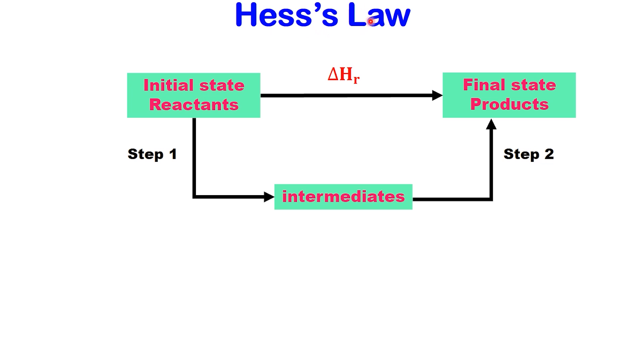Hess's Law states the enthalpy change for a chemical reaction is always the same, no matter how the reaction takes place or how many steps it involves. In other words, enthalpy is a state function. It depends only on the starting point and the final point, not on the path we take between them.